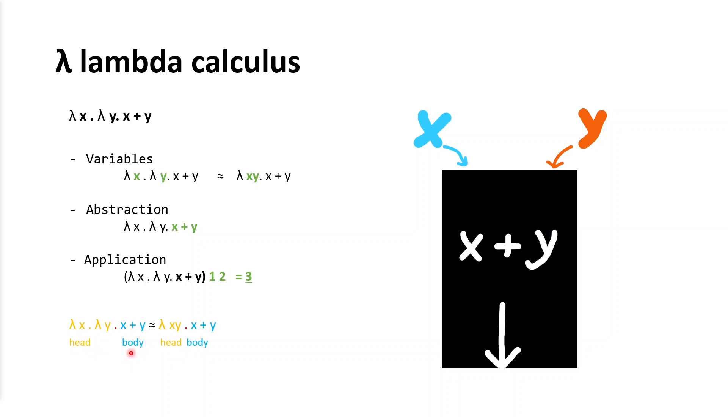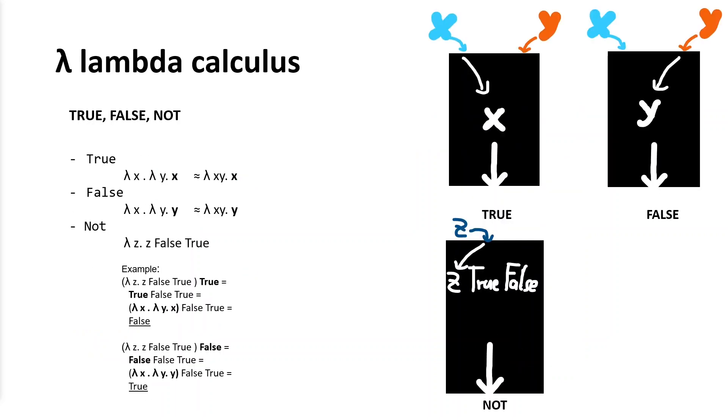Let's move to another example with boolean. We can imagine lambda calculus like some black box. What is on the input of this black box are variables, what is inside this black box is abstraction part, and what is output is just application part. I defined TRUE as lambda expression which has two input variables, x and y, and returns x. FALSE returns y because it's opposite of true.